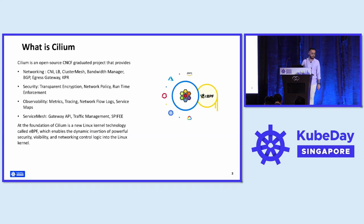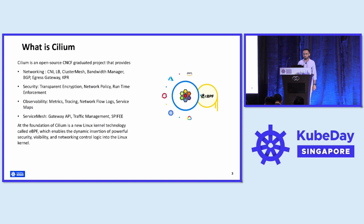Let's go to Cilium. Most of you are aware of Cilium at least as a CNI. In brief, Cilium is a CNCF-graduated project. It offers features like CNI, load balancing, cluster mesh, security features, observability, and service mesh. At the foundation, Cilium utilizes eBPF, which enables the Linux kernel to add enhanced features for security, visibility, and networking.